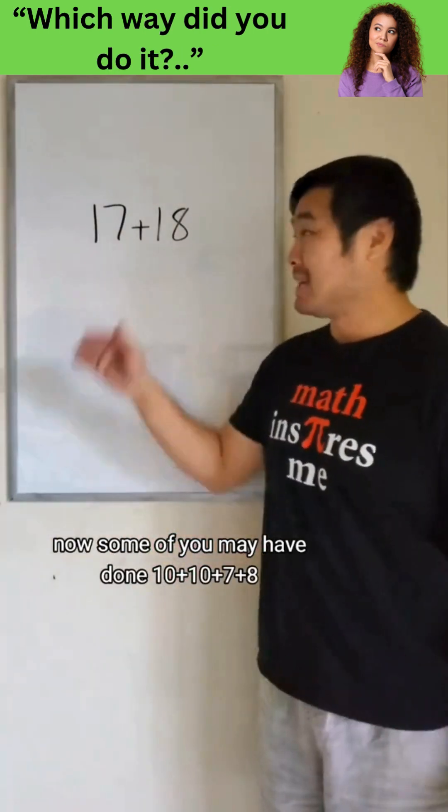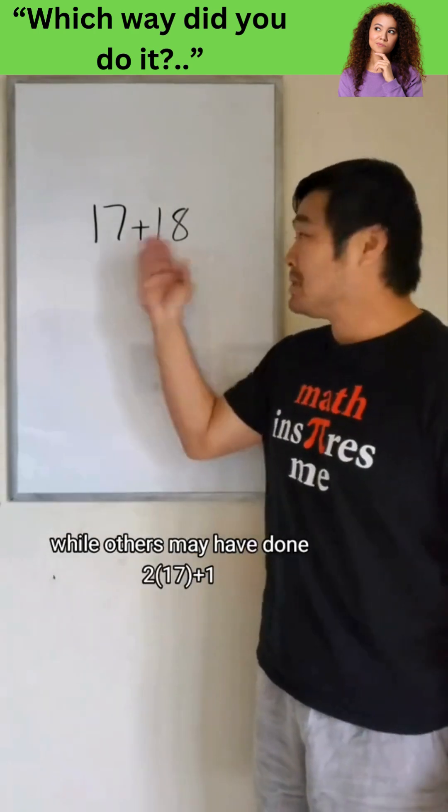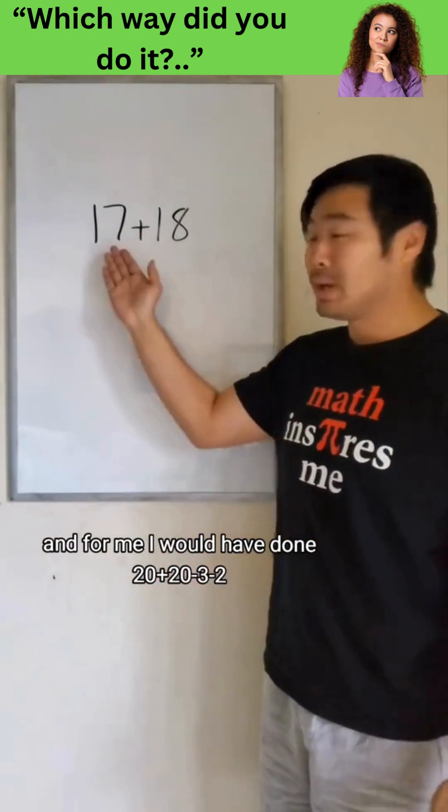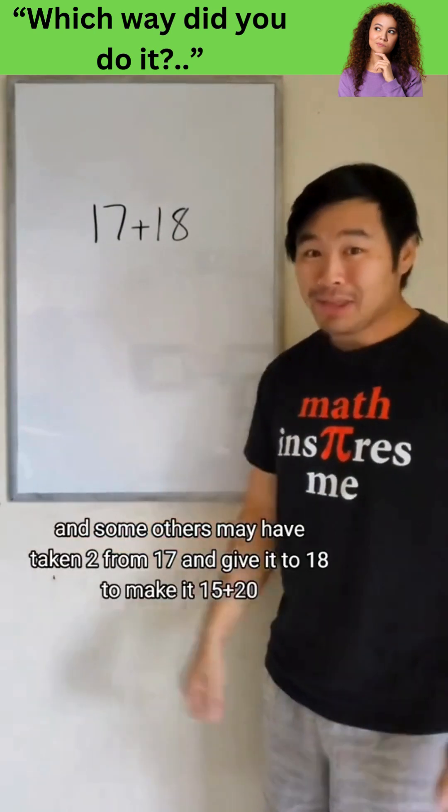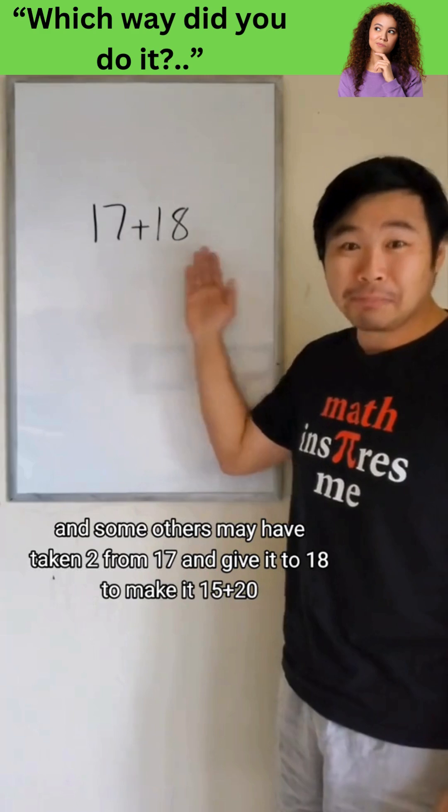Now, some of you may have done 10 plus 10 plus 7 plus 8, while others may have done 2 times 17 plus 1. And for me, I would have done 20 plus 20 minus 3 minus 2. And some others may have taken 2 from 17 and give it to 18 to make it 15 plus 20.